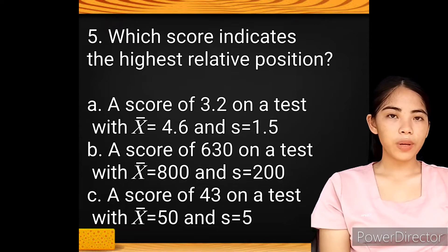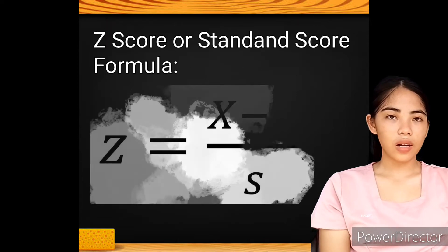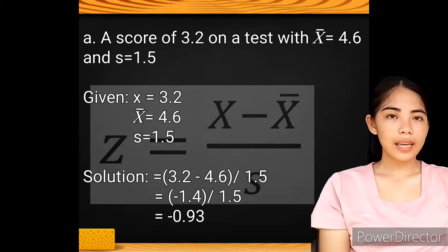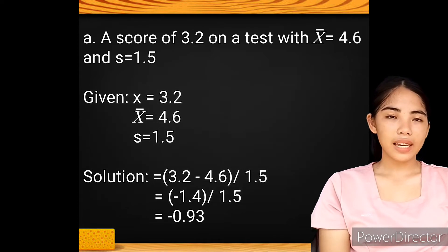To get the z-score, we will be using the formula z equals x minus mean divided by s. For test A, the values for x, mean, and s are 3.2, 4.6, and 1.5.